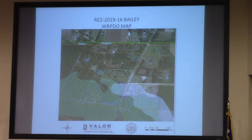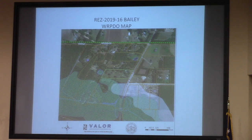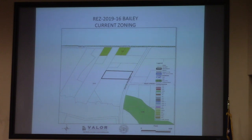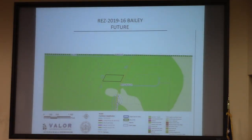Ms. Stephens: This is a request to rezone half of the 5-acre tract, with the remaining portion to be combined with the applicant's adjacent property to the south. RA zoning is requested because the tract becomes non-conforming once it is split. The comprehensive plan future development map does depict the subject property in an agricultural forestry character area, in which RA zoning is listed as a permitted zoning district.